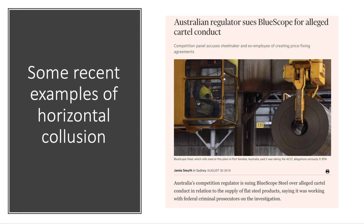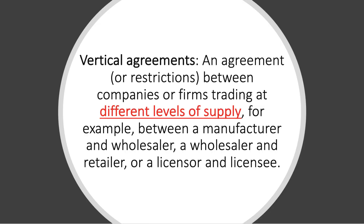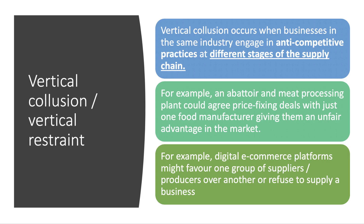That covers horizontal collusion. Now, vertical collusion happens at different stages of the supply chain — it's any collusive agreement between companies or businesses trading at different levels or stages of supply. For example, a manufacturer might collude with a wholesaler, a wholesaler might collude with a retailer, or a licensor might collude with a licensee.